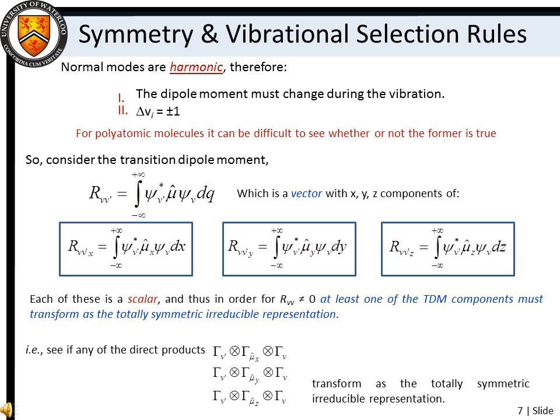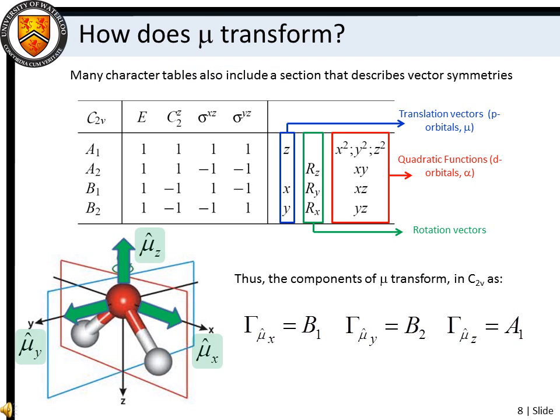For polyatomic species, it can be difficult to see whether or not the former is true. Instead, we can consider the transition dipole moment integral. Owing to the fact that the molecular dipole moment is a vector with x, y, and z components, we must consider the x, y, and z components of the transition dipole moment. For a non-zero transition dipole moment to occur, at least one of the component integrands must be transforming as a totally symmetric irreducible representation. Thus, we must determine the direct product of the irreps for the initial vibrational wave function, the dipole moment vector component, and the final vibrational wave function. We already know how to determine the symmetry of vibrational wave functions. To determine the symmetry of the dipole moment vector components, we need only look in the vector column of the associated character table.